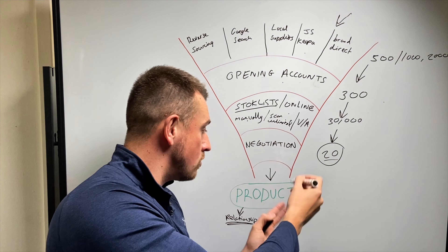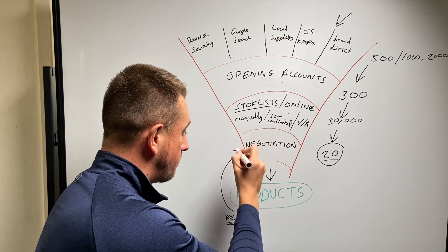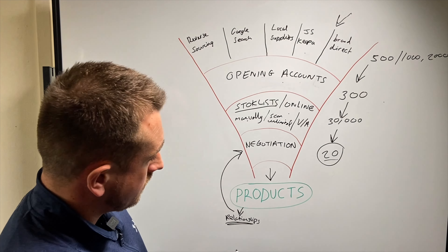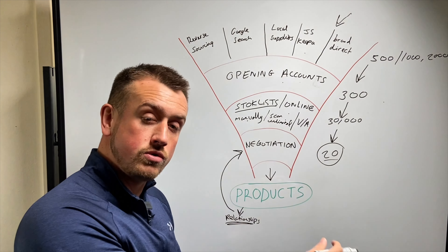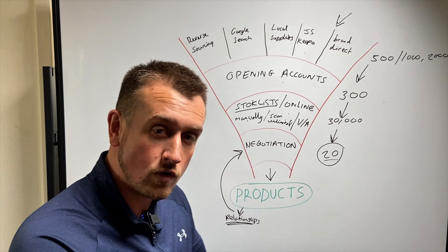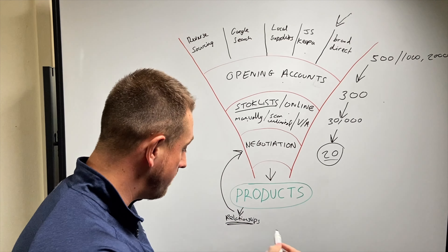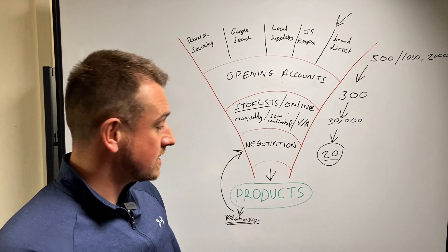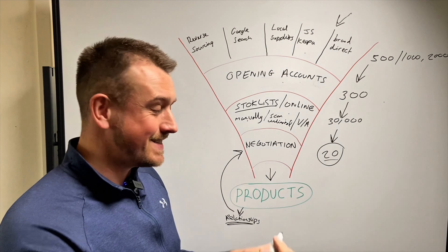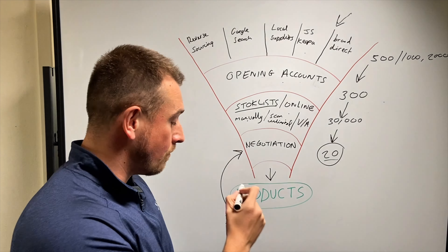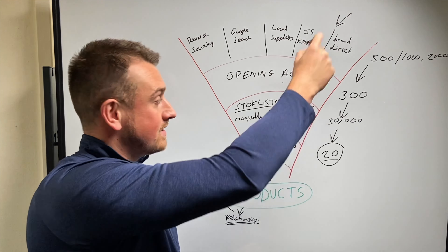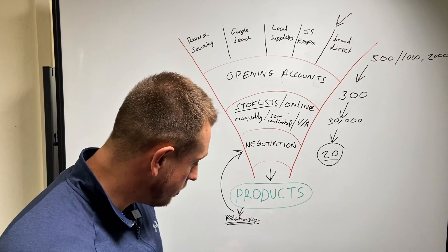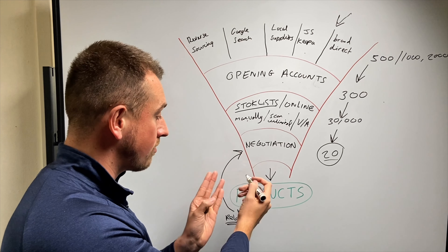The better relationship you can build — generally by buying more from that supplier — the better your negotiation can now be, which means you're going to be getting products for a cheaper price. And over time, once that sales rep or supplier knows you're buying products consistently, knows you've got money to spend, they're going to start coming direct to you with products. They will email you, WhatsApp you, text you saying we've got certain products coming in — is this something you're interested in? When that starts happening, you're now doing this less and less because the suppliers are coming to you.